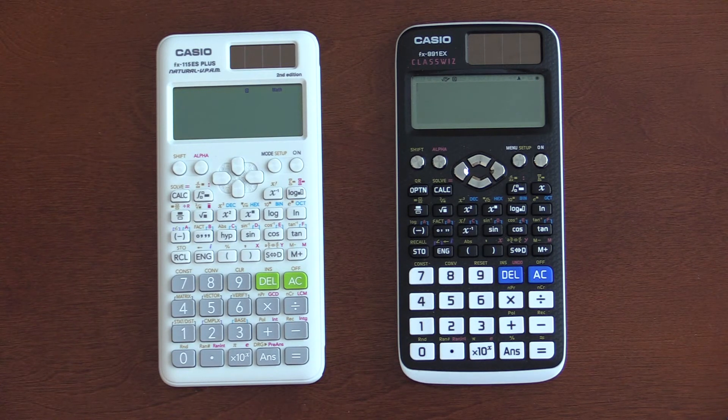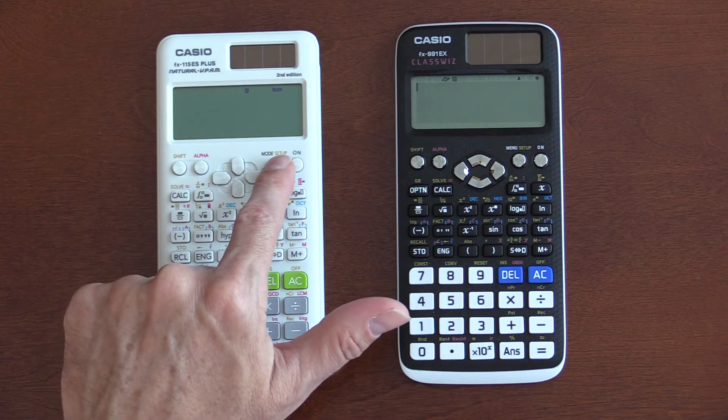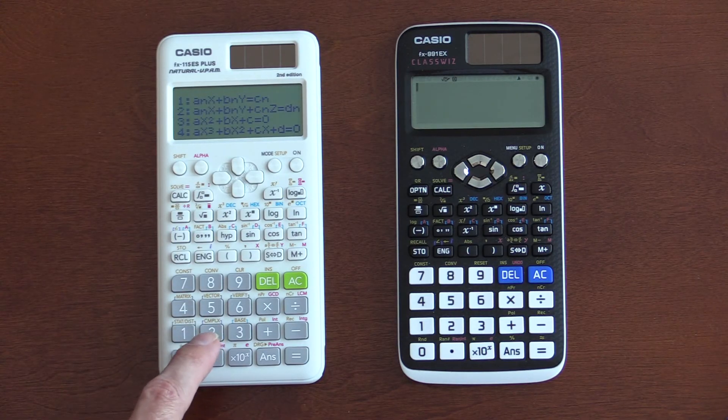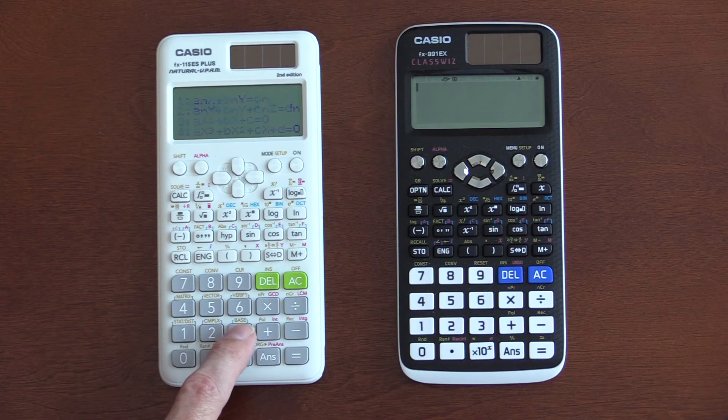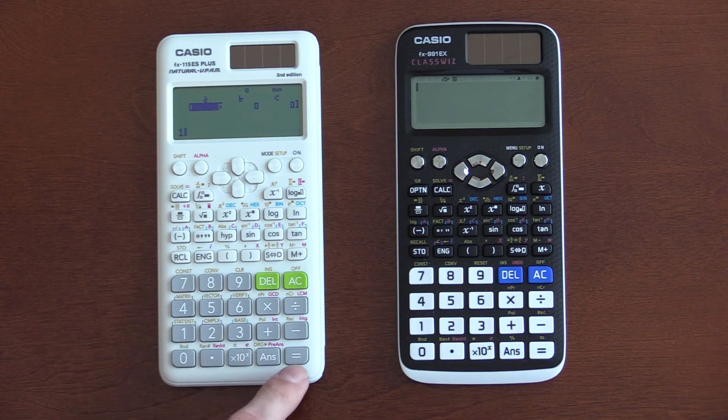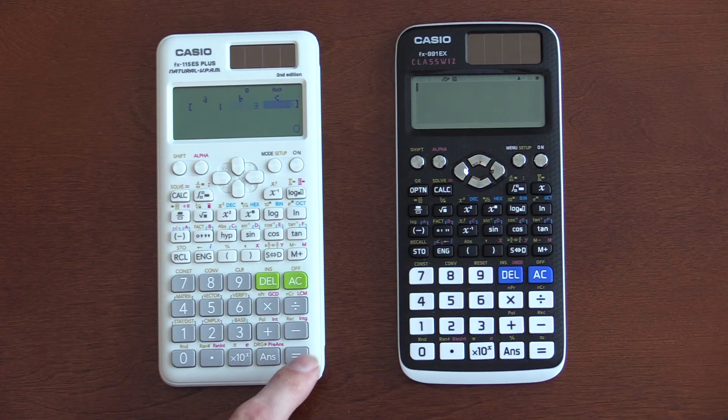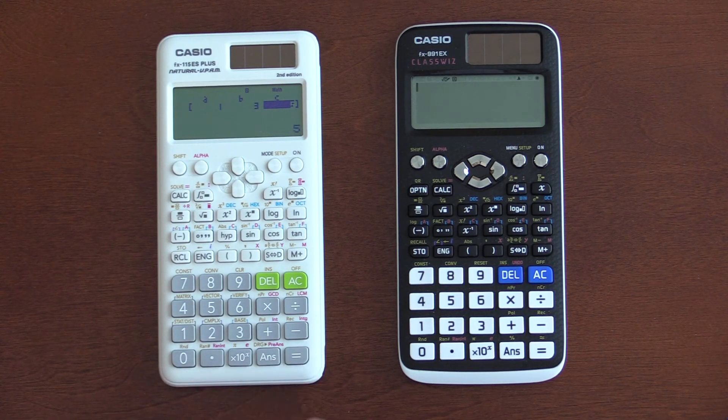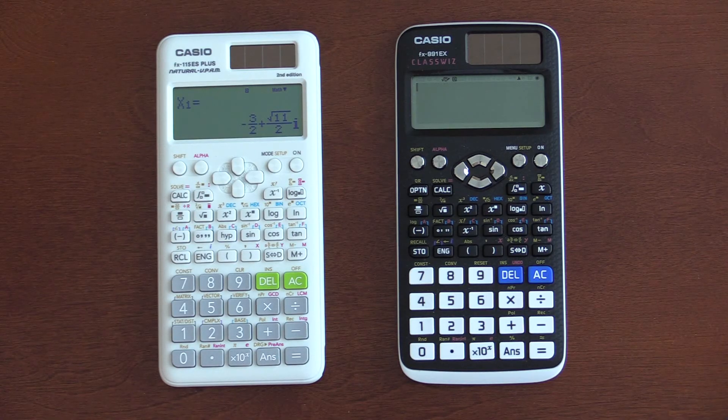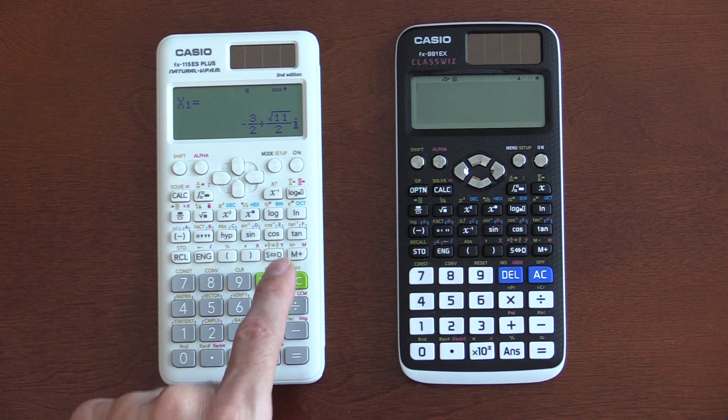Let's look at solving a quadratic on these calculators. First thing we need to do is go into the mode. We're going to do an equation. And, we're going to do type 3. And, we're going to do 1 for our a, 3 for our b, and 5 for our c. Equal. And, the answer is expressed that way. So, negative 3 halves plus square root 11 over 2i.